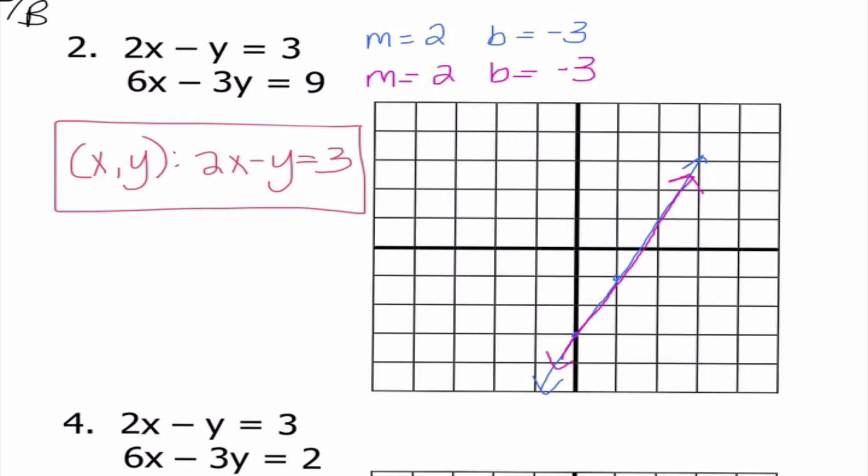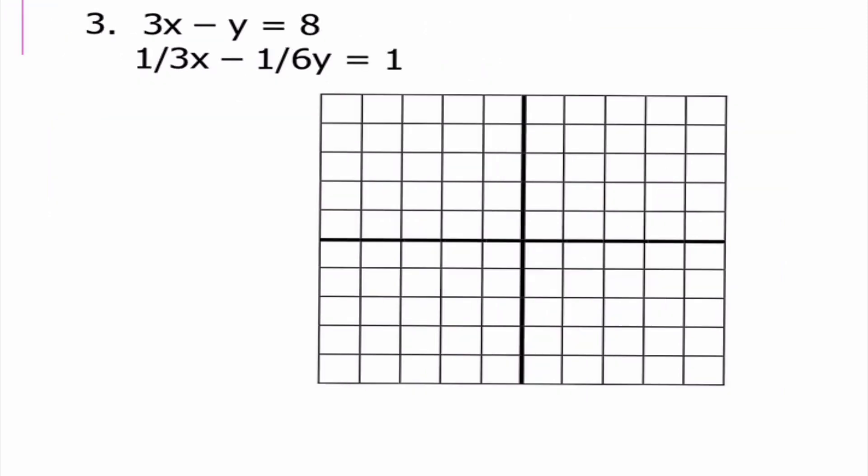Now, just kind of a side note, if we look at these two lines, do you guys notice anything about them? And what kind of stands out to me is that this second line is a multiple of the first line. In fact, if I multiply this first equation by 3, it gives me the second equation. If that is something that we notice right away, I don't even have to do this. I can go ahead and just write my answer right away.